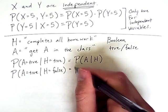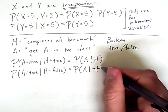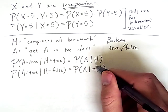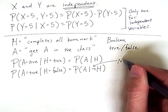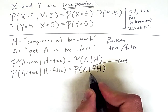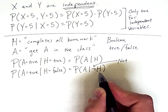Then I would use the negation symbol from Boolean logic to indicate that. So this notch means not. So this is the probability of getting an A in the class given that it is not the case that all homework was completed.